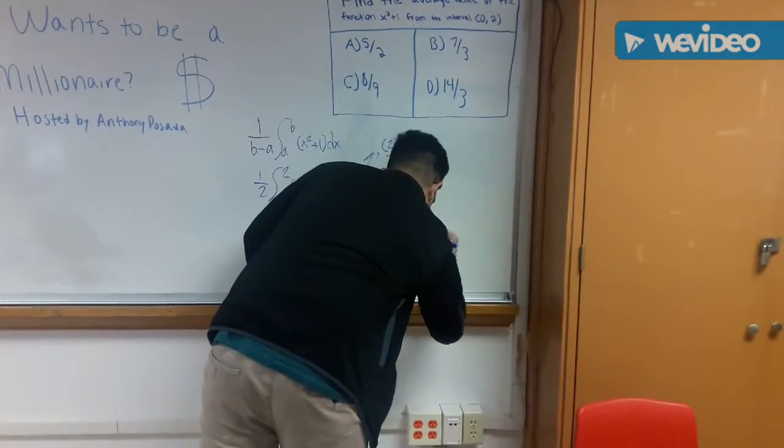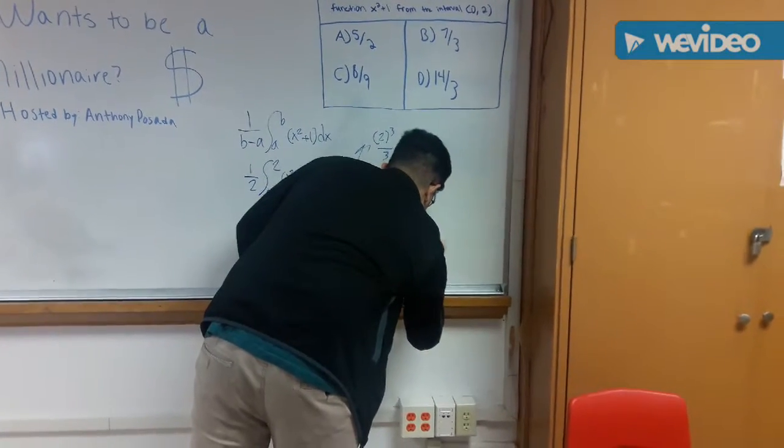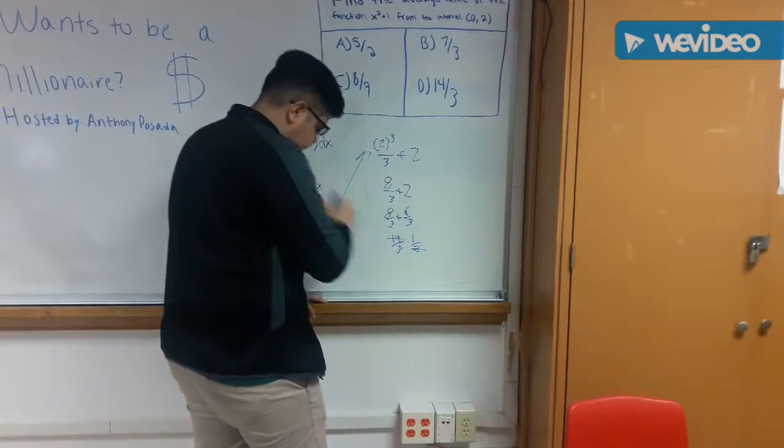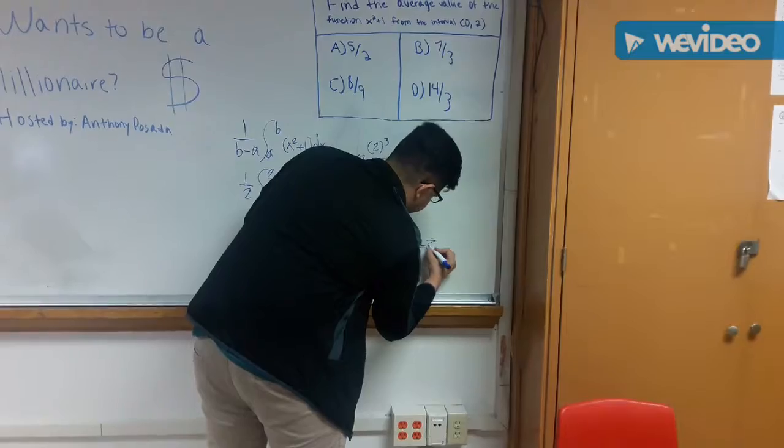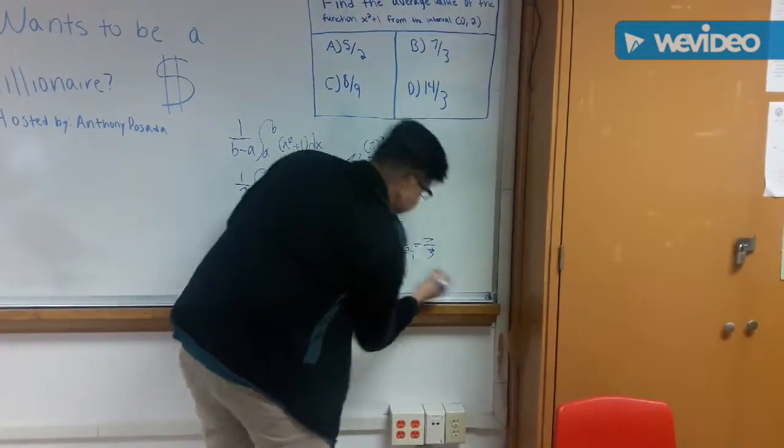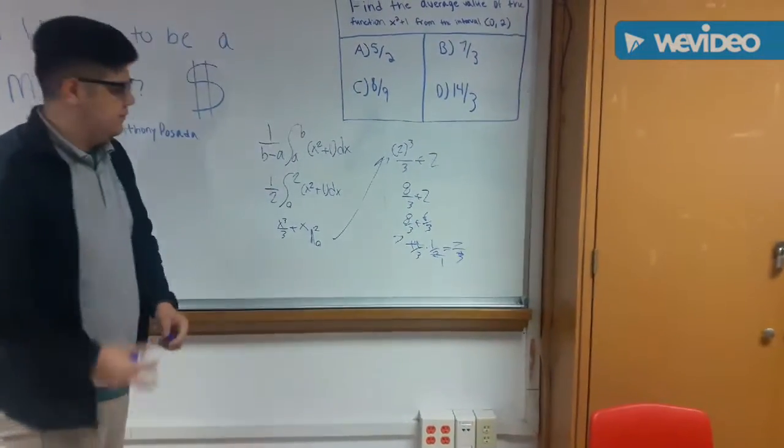Okay. Seven. You're right. Yeah, you're right. Seven over 3. Alright. I told you.